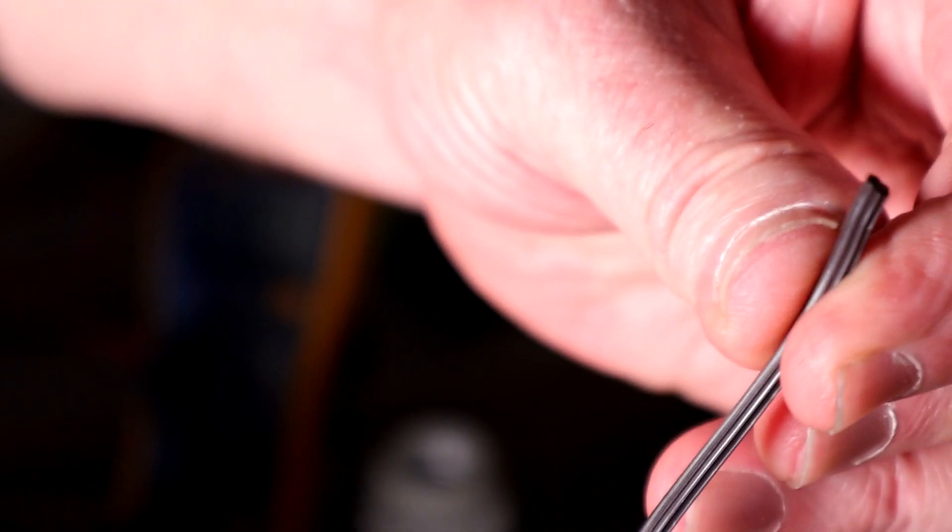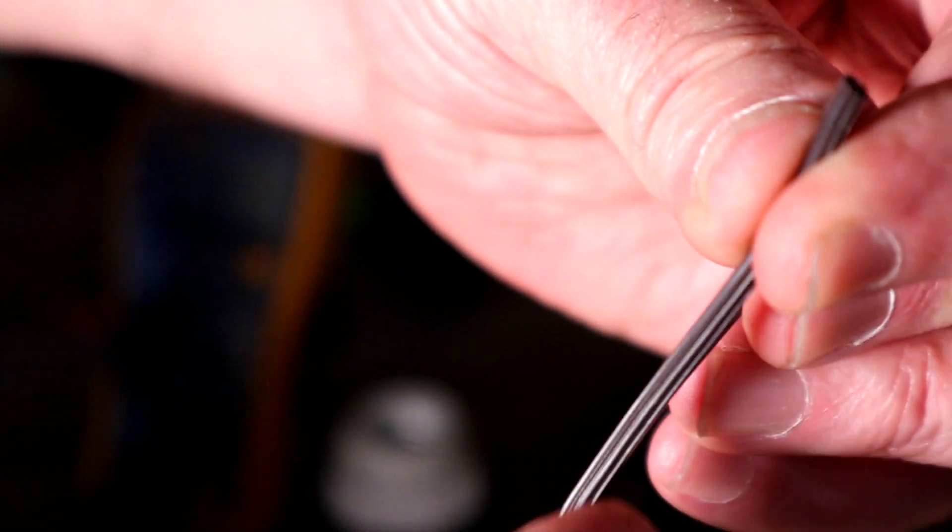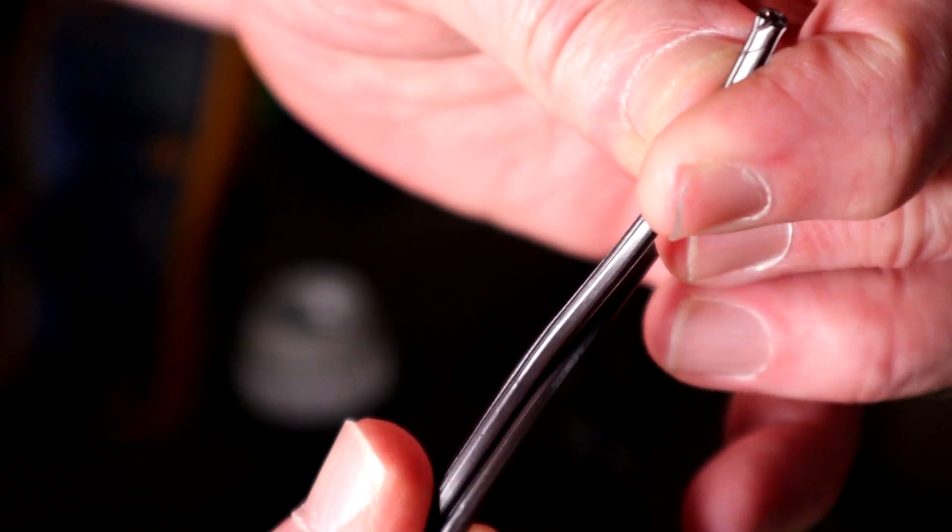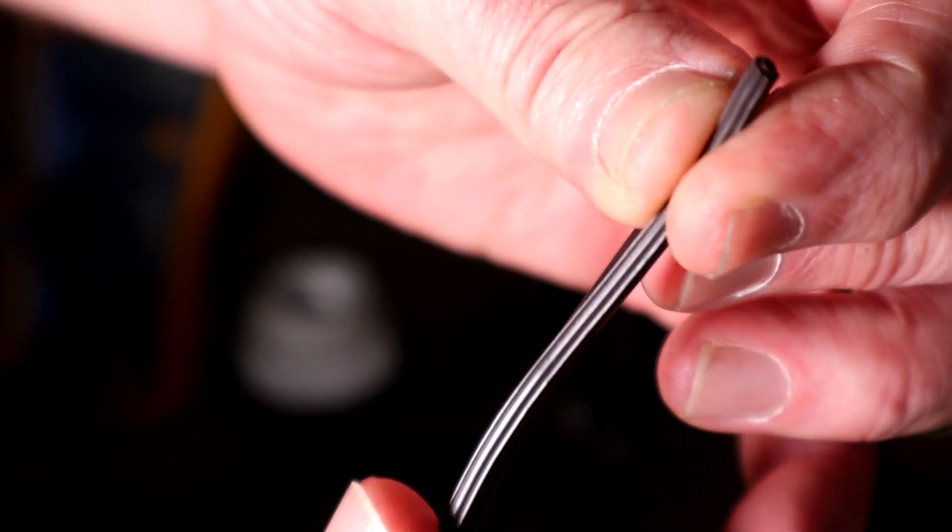If I turn it around, you can see this one has ribs on it. So these ribs on the one conductor are what is identifying it.